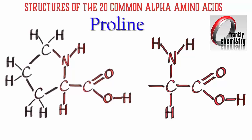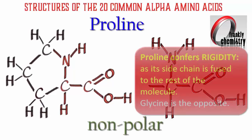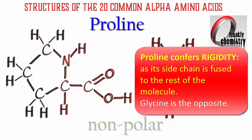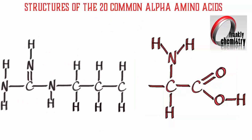Here's proline, which stands out from the other 19 amino acids. You can see that the side chain is actually fused to the rest of the molecule. As a result, proline confers significant rigidity into the polypeptide chain, whereas glycine, with just a H as its R group, is the opposite — it confers flexibility.